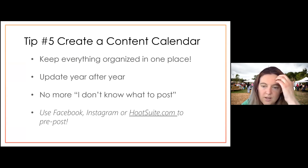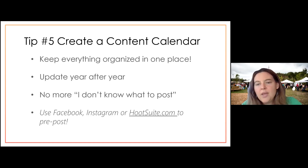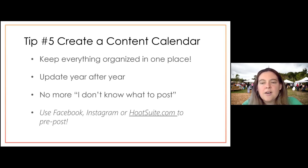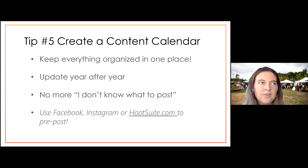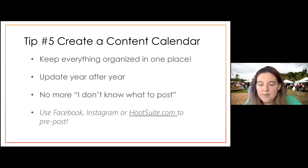A really great tool is Hootsuite.com — it's free, though you can get more functionality if you pay. You can create posts and schedule them in Hootsuite, and it will launch them when that date comes. Spend some time now before the market season really gets going to plan out some of your posts. Things like exactly when sweet corn comes in you probably won't know, but you can at least put in your content calendar a post about sweet corn — maybe you have a funny joke that goes with it — around the time sweet corn would be ready.